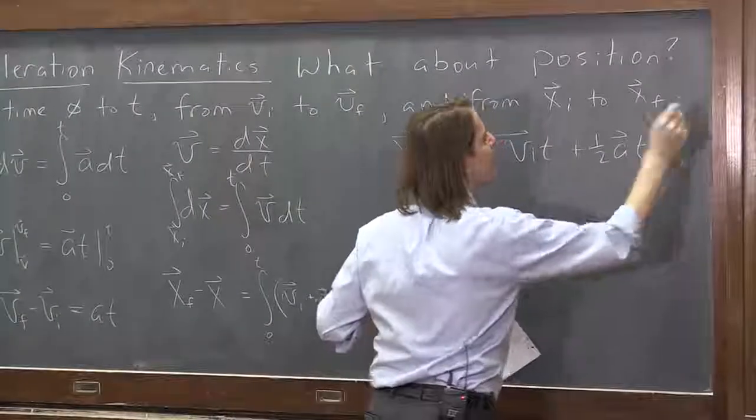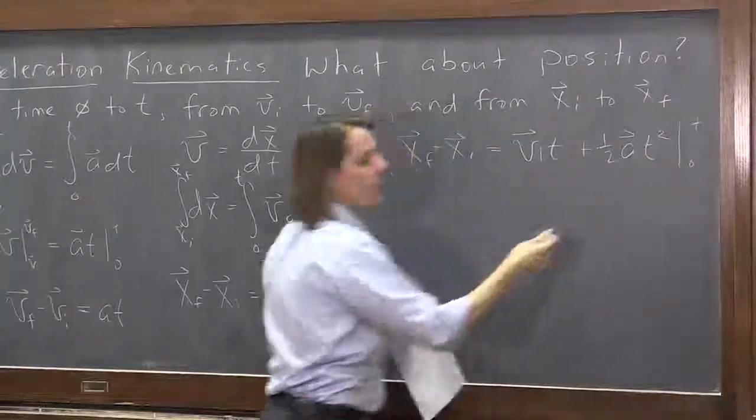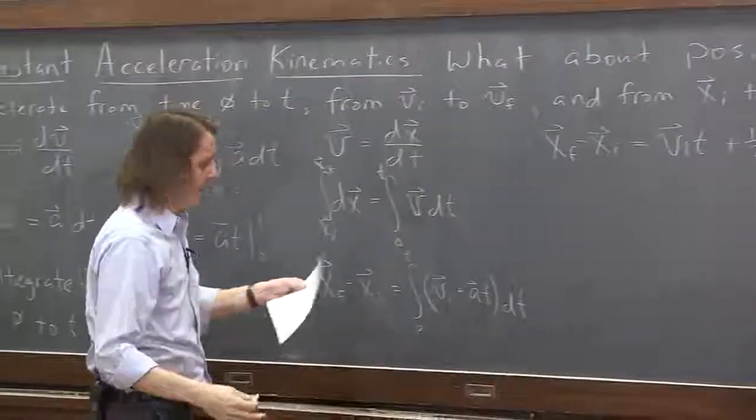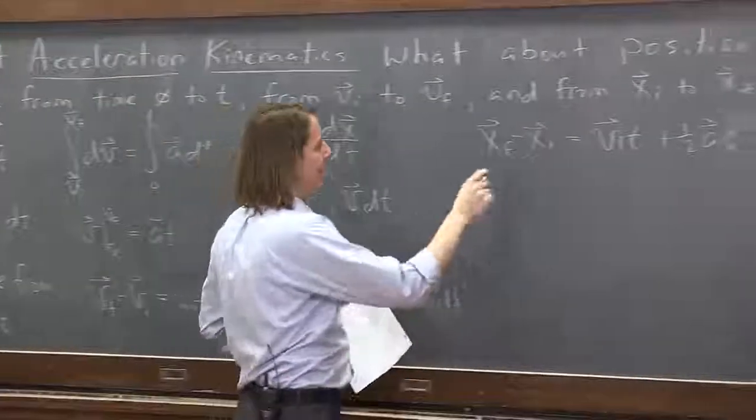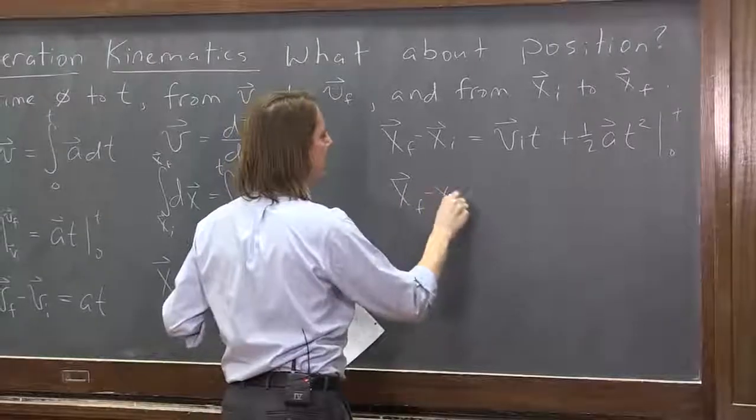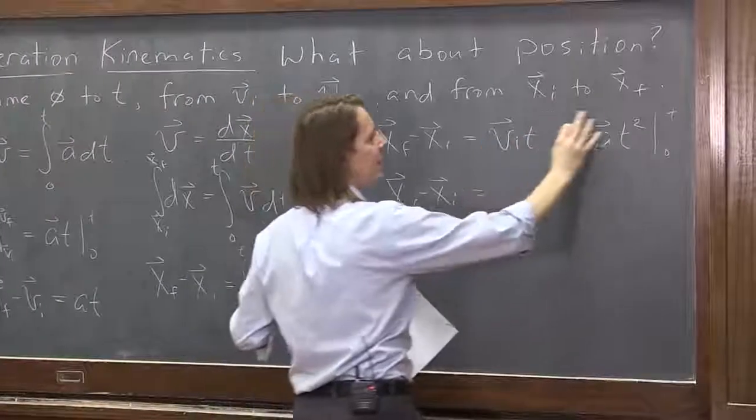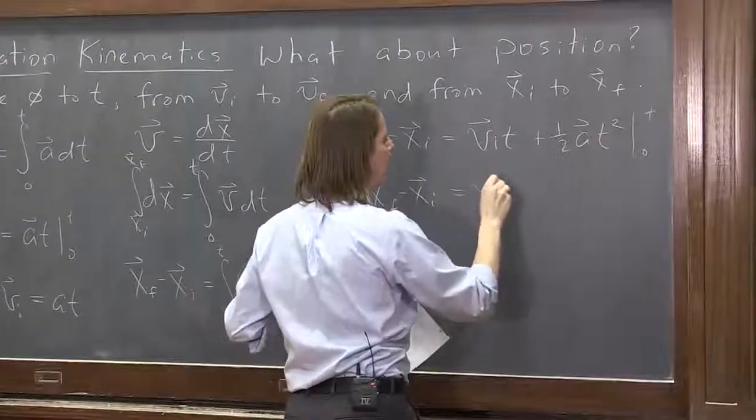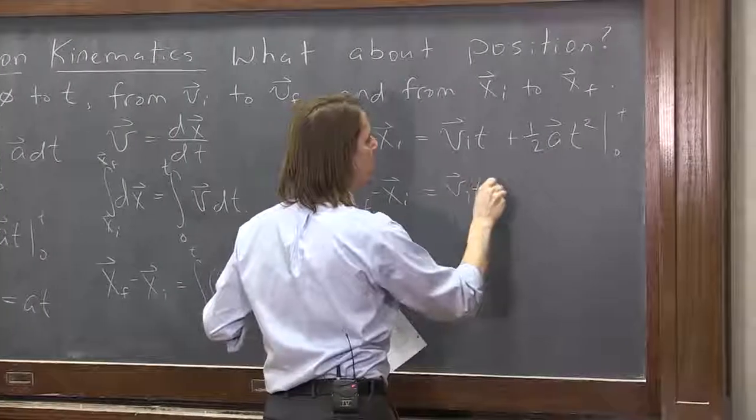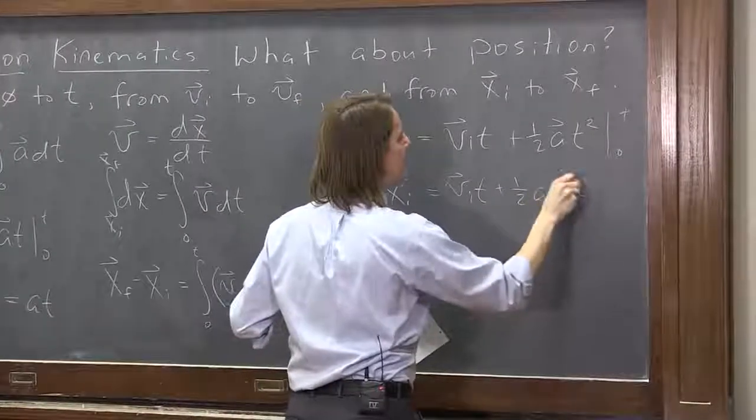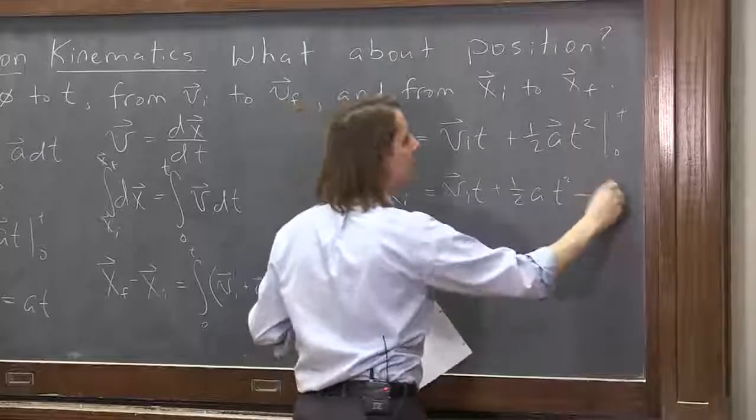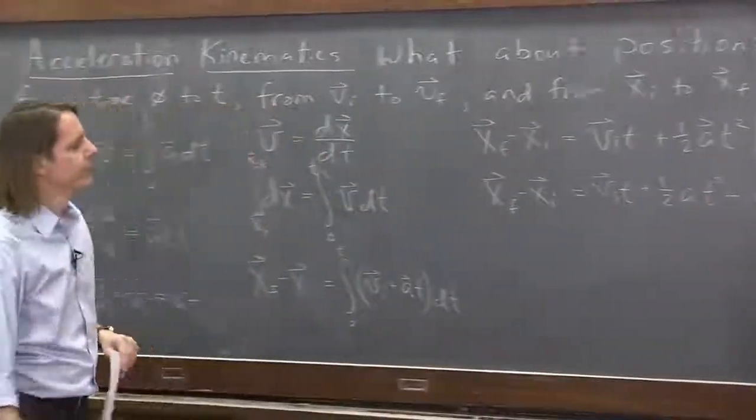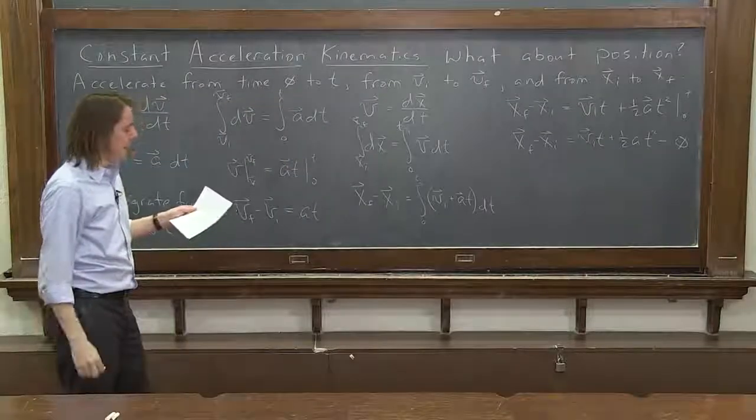And yeah, technically, we've got to evaluate that from 0 to t. It kind of already was. But just to give myself another step, I'll put the final position minus the initial position. Evaluate all this at t, vit, plus 1 half at squared, minus evaluate it all at 0, 0. And then there you have it.